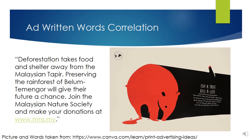The smaller words under the main words say: deforestation takes food and shelter away from the Malaysian tapir. Preserving the rainforest of Belum Temenggor will give their future a chance. Join the Malaysian Nature Society and make your donations at www.mns.my. These words further describe deforestation and the correlation of the ad's purpose with the graphic shown. The written words support it by giving the reason why deforestation leads to the deaths of tapirs — because it takes away the necessary food and shelter for the animals.